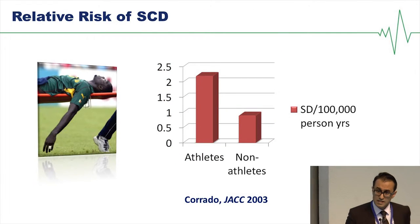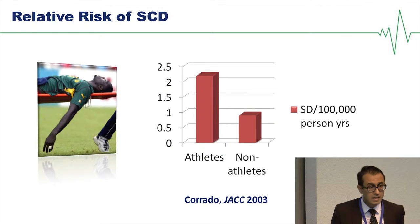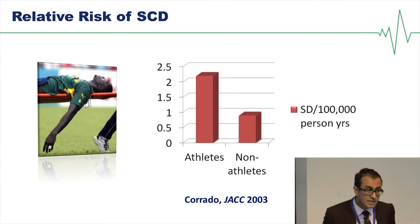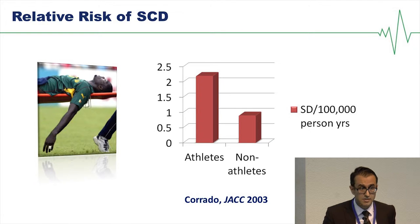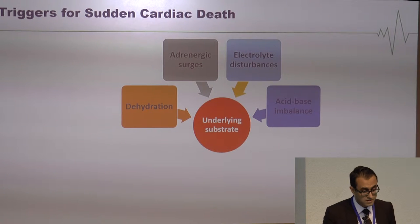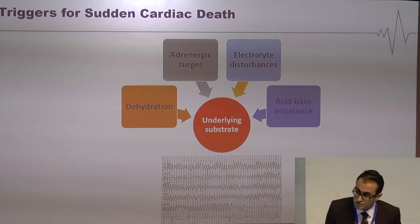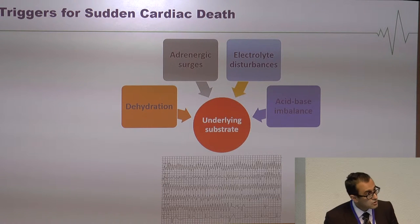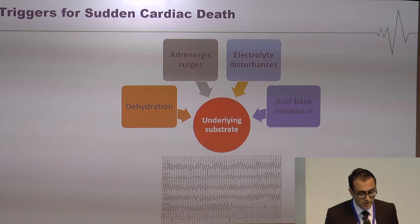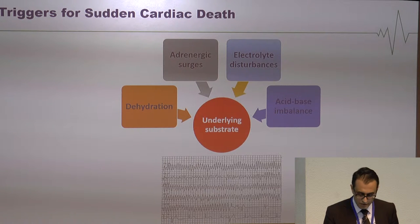It's well established that athletes with an inherited underlying problem have a substrate for a potentially fatal arrhythmia, and are twice as likely to suffer sudden cardiac arrest than non-athletic individuals affected with the same condition. There are a variety of triggers for this, including dehydration, adrenergic surges associated with athletic exertion, electrolyte imbalances, and acid-base disturbances, which can act on this underlying substrate to potentiate a fatal arrhythmia.